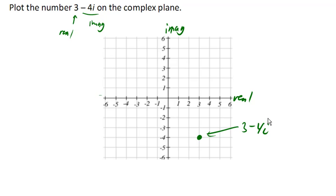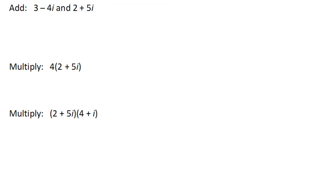Okay, so let's look at some more arithmetic here. Suppose I wanted to add 3 minus 4i, and I'm going to add that to 2 plus 5i. So when we add or subtract complex numbers, we just add the real parts and add the imaginary parts.